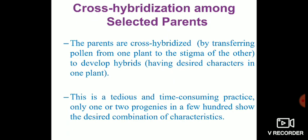The process of hybridization is tedious, quite cumbersome, and time consuming. Besides these difficulties, only one or two progenies in a few hundred show the desired combination of characteristics in the offspring. For example, if you have done a hybridization experiment 100 times, only three or four experiments will yield the right combination of characters in the offspring; the remaining 96 percent will not give the desired combination.